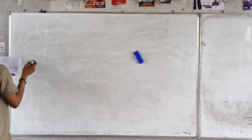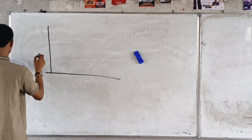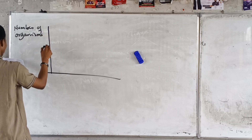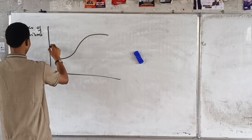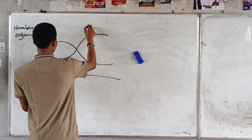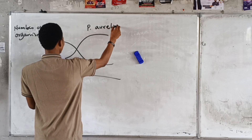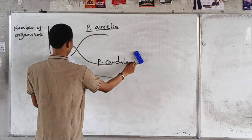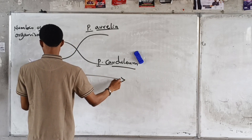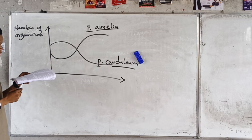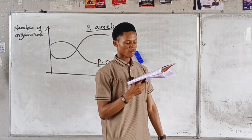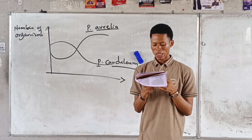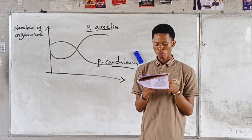Now, looking at a diagram — use the diagram below to answer questions 3 and 4. The question says: the type of interaction shown is referred to as dash. Options are: A. Interspecific competition, B. Intraspecific competition, C. Mutualism, D. Cooperation.